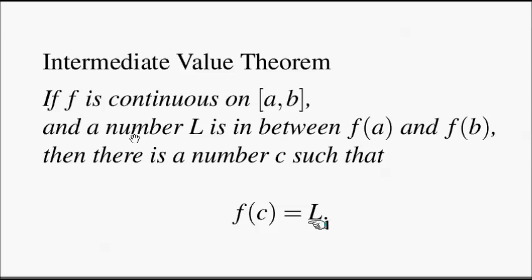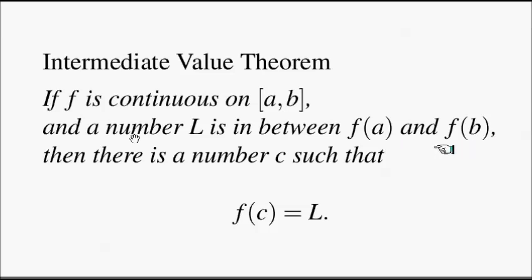Another way to understand this, in an intuitive sense, is that this quantity is continuously changing as we change our parameter x, or variable, from a to b. So it starts from f(a), that is the beginning value, and this value is continuously changing from f(a) to f(b). So it will eventually go through this L value that is in between. But that uses our continuous, everyday notion of continuity.